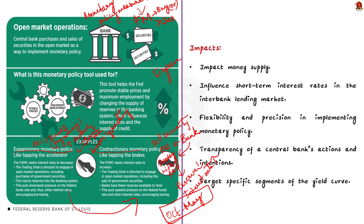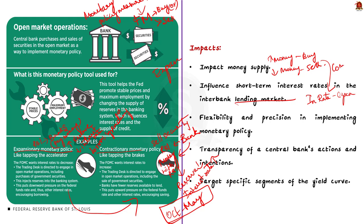Now talking about the impacts of OMO. OMO directly impacts the money supply in the economy — buying securities increases the money supply while selling securities reduces it. Secondly, central banks like RBI use OMOs to influence short-term interest rates in the interbank lending market. By adjusting the supply of money in the banking system, central banks can guide interest rates towards their target level. For example, if a central bank wants to lower interest rates to stimulate borrowing and investment, it will conduct expansionary OMOs. Thirdly, OMOs provide central banks with flexibility and precision in implementing monetary policy.